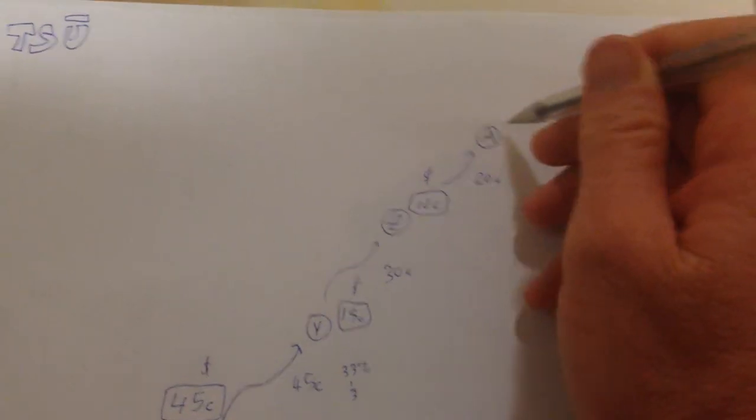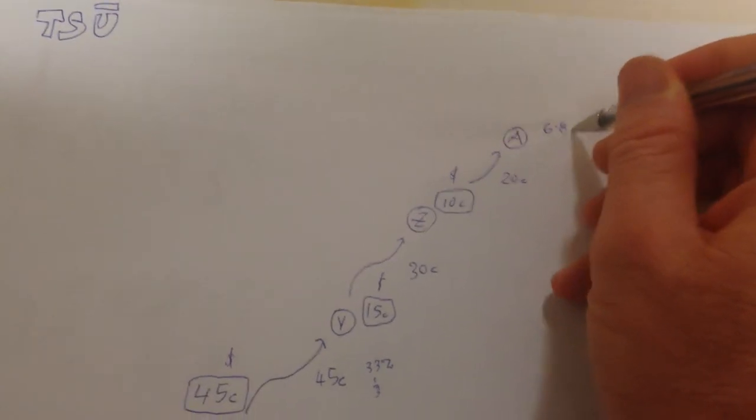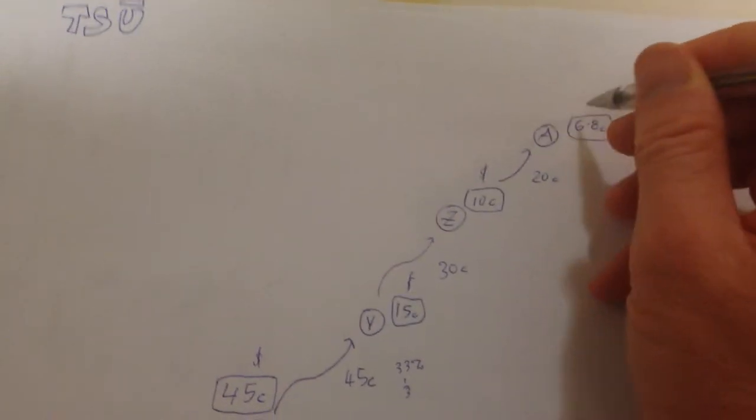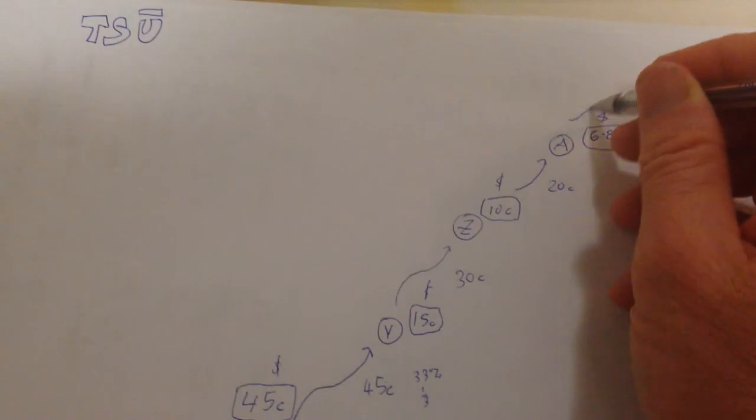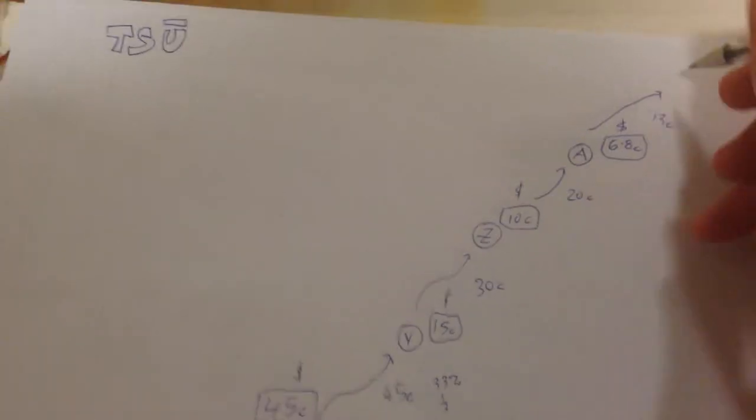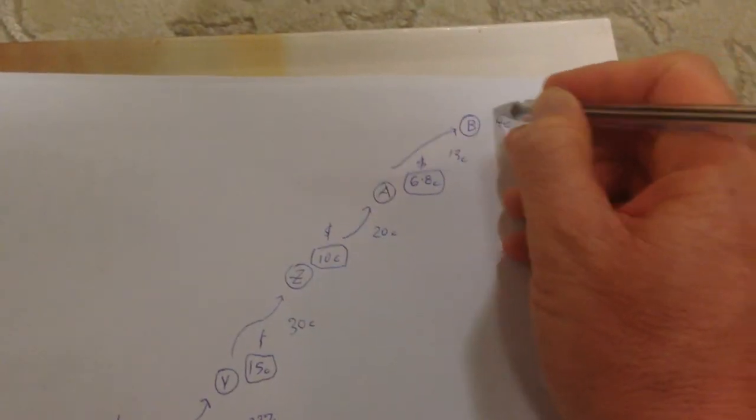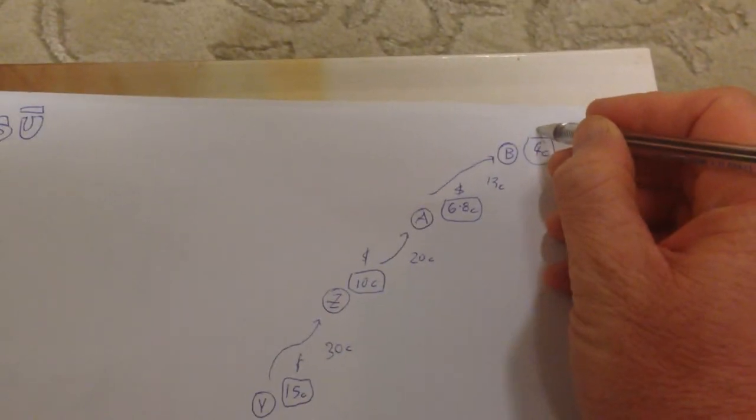Person A is going to get a third of $0.20 which is like about $0.069 or something, say $0.068. Which leaves, let's take seven out, which leaves like $0.13 which gets passed up to person B, who gets a third of that which is about $0.04 and so on and so on, it goes up. That's what that looks like.